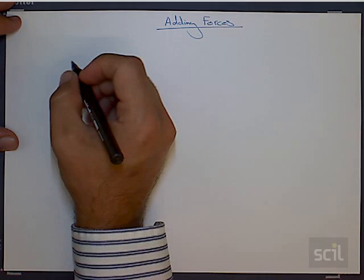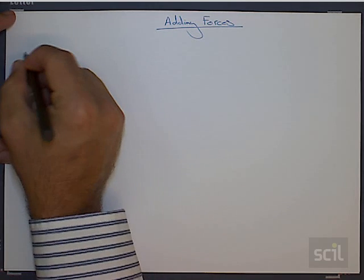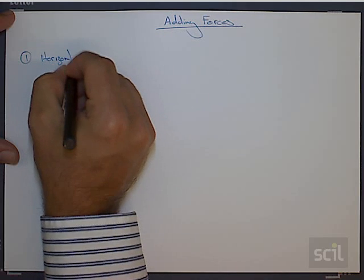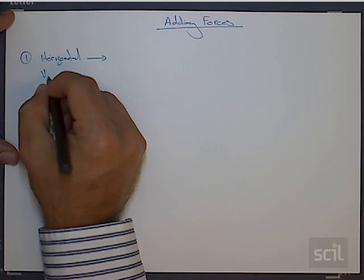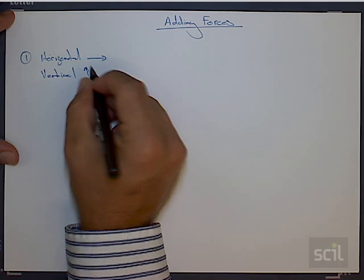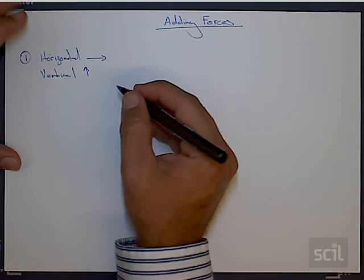Okay, so what we're going to be looking at now is the horizontal and vertical components for force. So the horizontal, which is sideways, and the vertical components of a force are the sideways and the upward parts of a force. So let's take